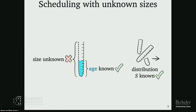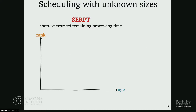Although I'll return to this at the end of the talk. Based on these two things, an idea is: I don't know a job's remaining size, but I could compute its expected remaining size. This results in a policy called SERPT — always serve the job of least expected remaining size.